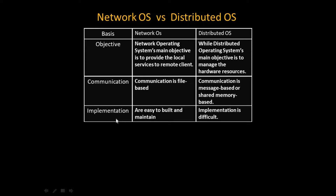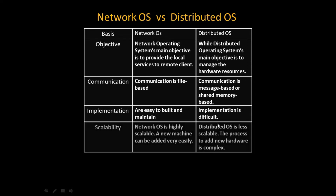On the basis of implementation: network operating systems are easy to build and maintain, while distributed operating systems are more difficult to implement. The network operating system is fairly easier to build and maintain than the distributed operating system.